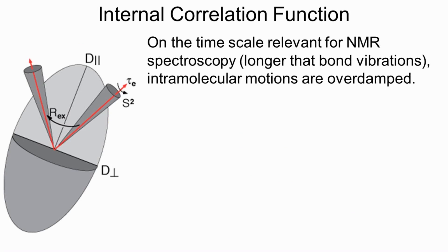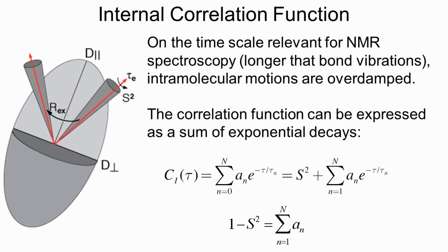Now we worry about the internal correlation function. On the picosecond-to-nanosecond timescales that contribute to NMR relaxation, internal motions are all overdamped — not periodic. This means the autocorrelation function for internal motions can always be expressed as a sum of exponentials, possibly infinite. The N-equals-zero component is a constant, pulled out and given the symbol S squared. The sum of the other coefficients — a sub 1 through a sub whatever — must add up to 1 minus S squared, so that the internal correlation function is normalized to unity when tau goes to zero.